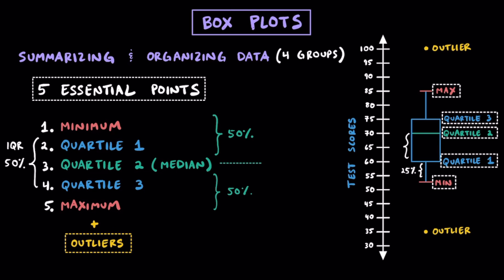As mentioned earlier, each of these sections of this box plot represents 25% of all of the data. Notice how some of the distances between the five essential points are a little bit longer and a little bit shorter. This just represents that those 25% of data values in that section are either a little bit closer together or a little bit more spread out.